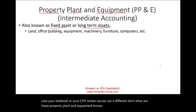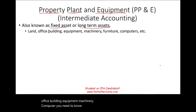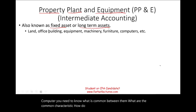Examples include land, office building, equipment, machinery, and computer. You need to know what is common between them — what are the common characteristics? How do we consider something as property, plant, and equipment and not something else?